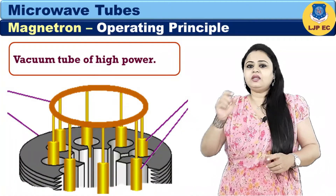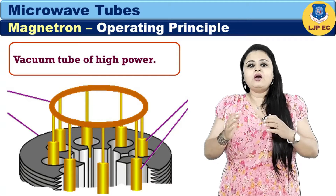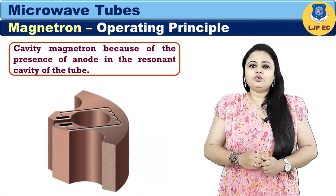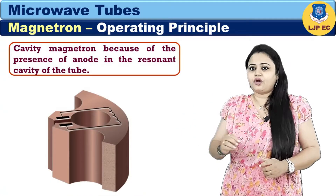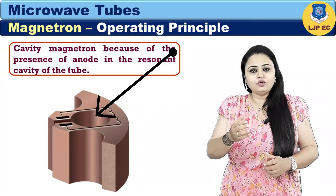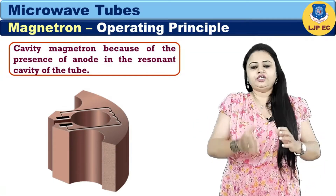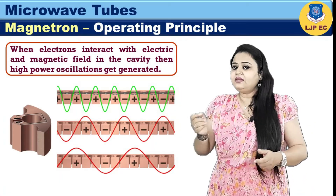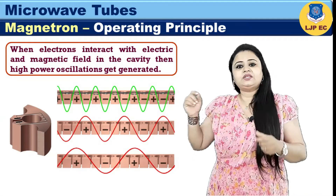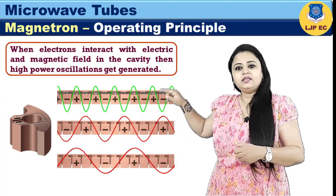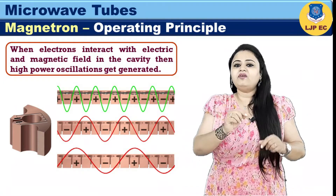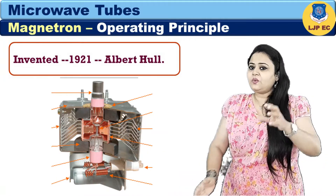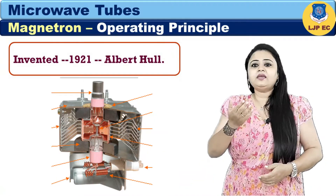A Magnetron is basically a vacuum tube of high power having multiple cavities. It is also known as a cavity magnetron because of the presence of the anode in the resonant cavity of the tube. The operating principle of Magnetron is such that when electrons interact with electric and magnetic fields in the cavity, then high power oscillations are generated. Magnetron was invented in 1921 by Albert Hall.